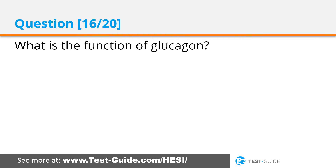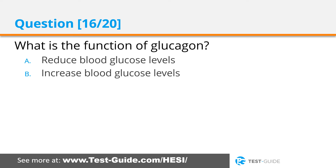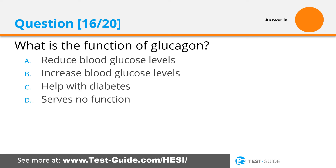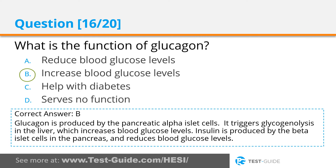Question sixteen: What is the function of glucagon? Options: reduce blood glucose levels; increase blood glucose levels; help with diabetes; serves no function. Correct answer B. Glucagon is produced by the pancreatic alpha islet cells. It triggers glycogenolysis in the liver, which increases blood glucose levels. Insulin is produced by the beta islet cells in the pancreas and reduces blood glucose levels.